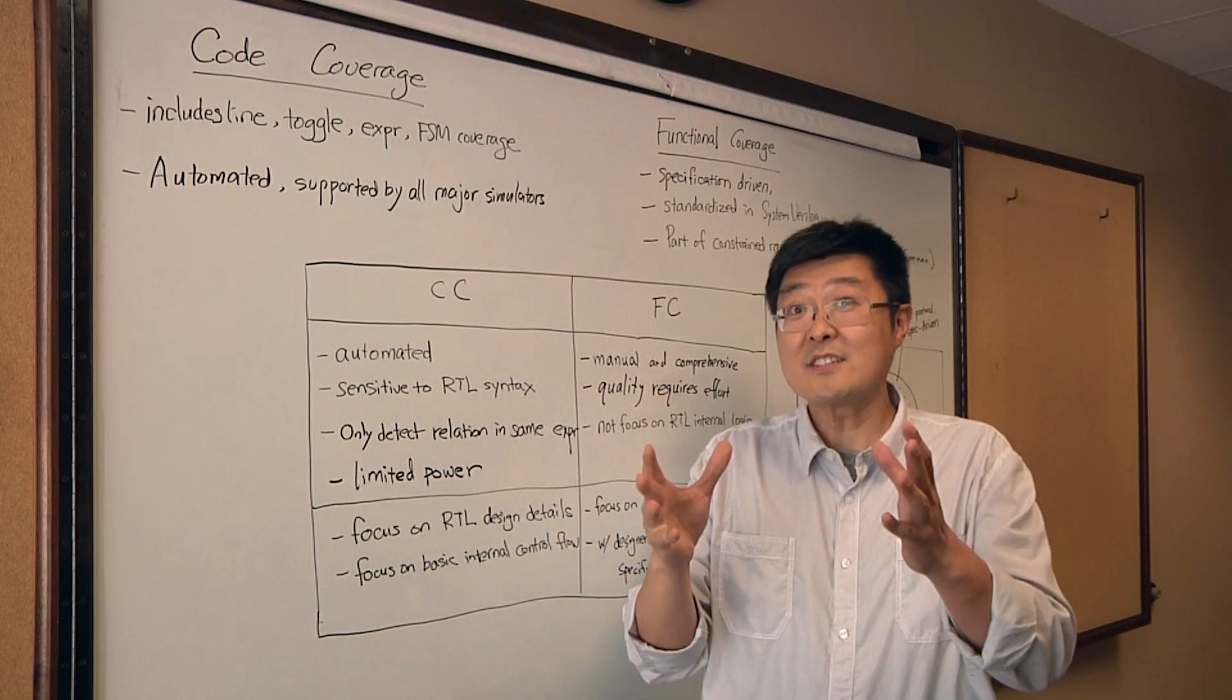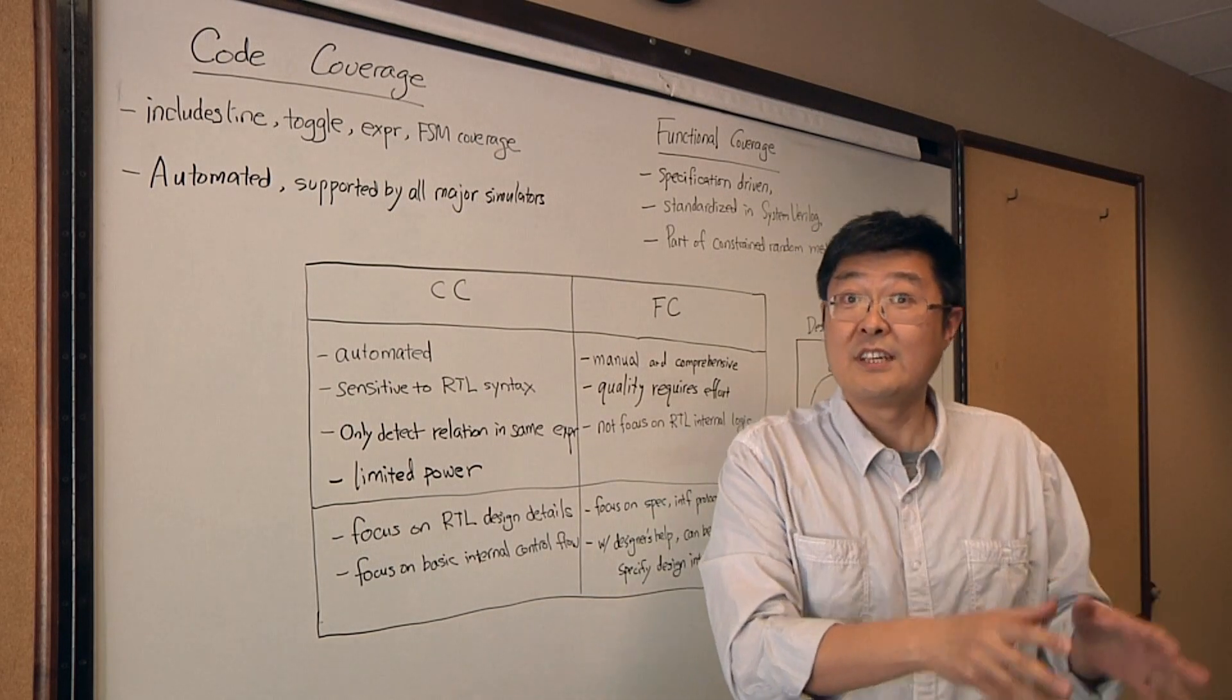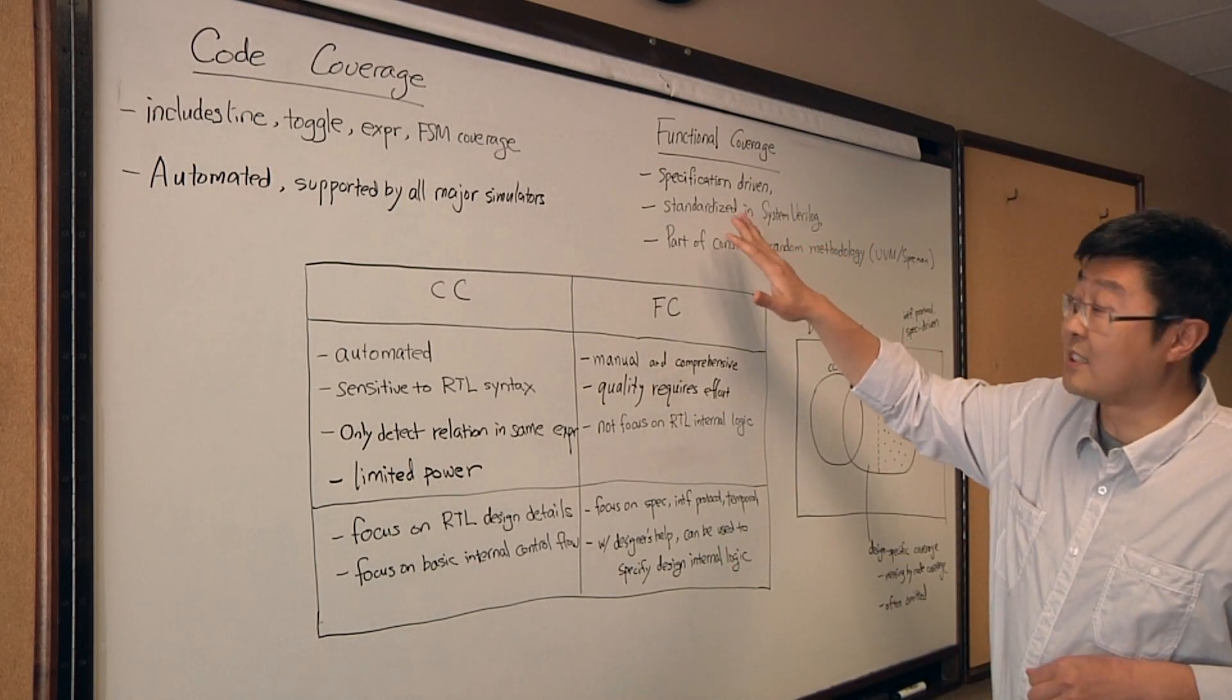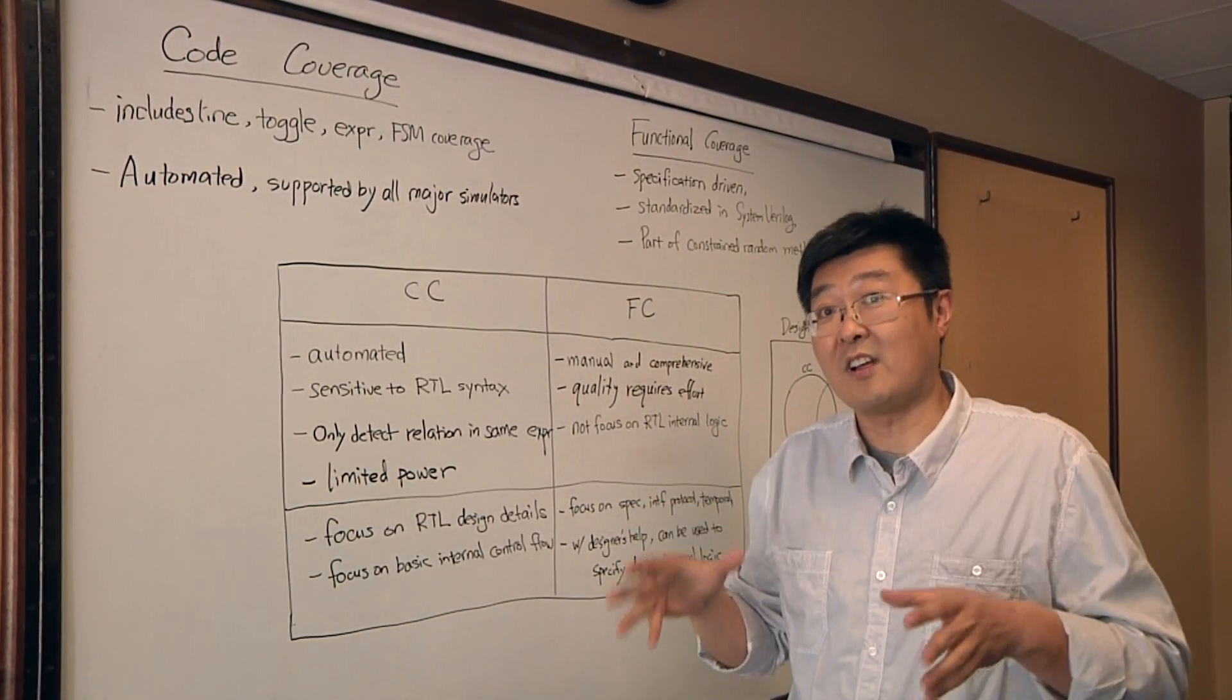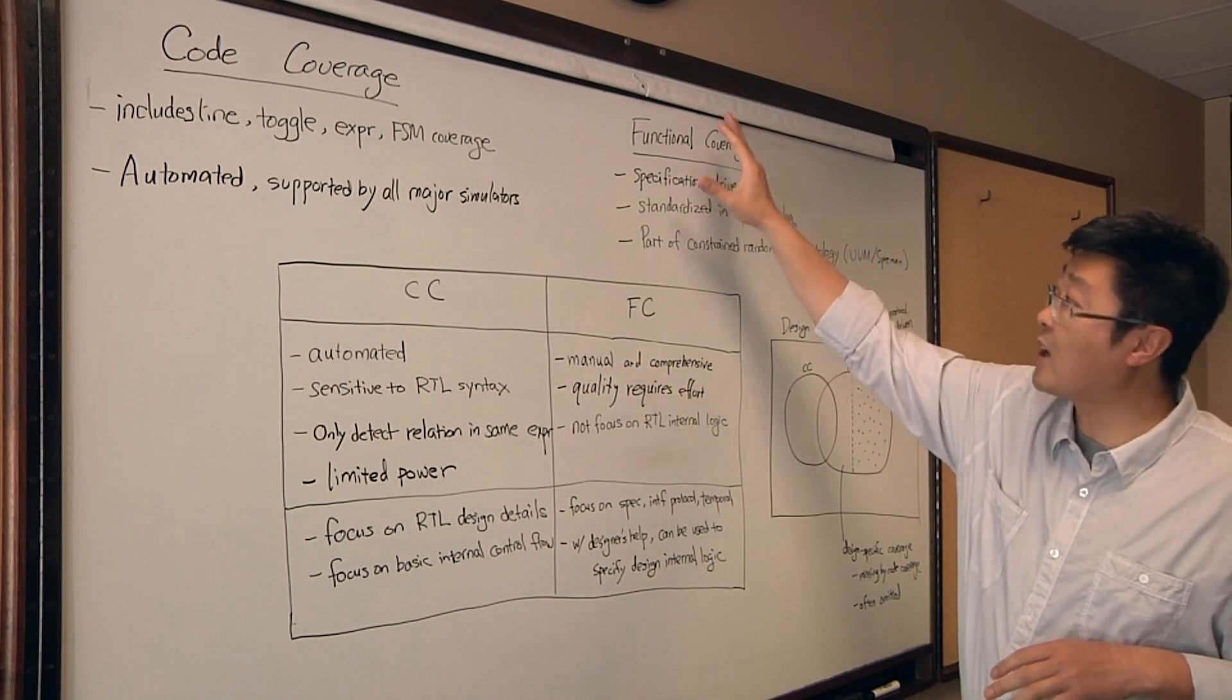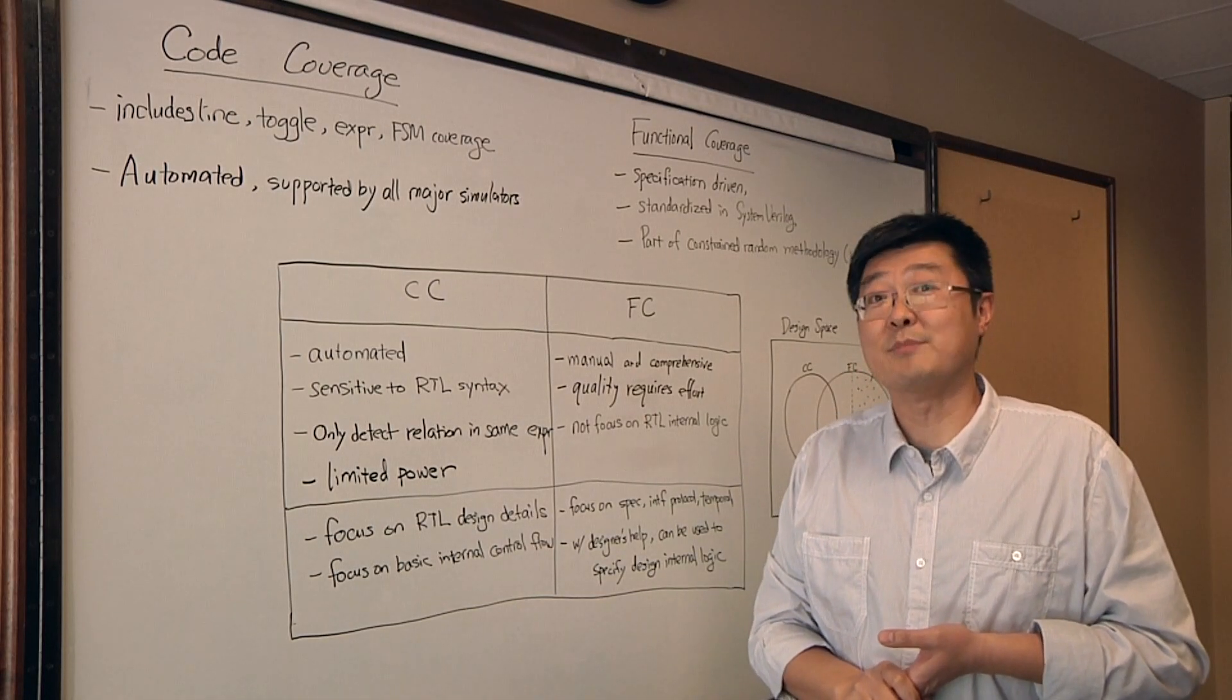So this functional coverage is typically a manual process, based on specification. The way to write it, as standardized over the years, is in SystemVerilog. SystemVerilog has support to write this functional coverage. This has become part of this constrained random methodology. As of today, it's UVM as well, because that's a well-known constrained random methodology.